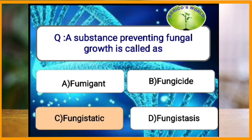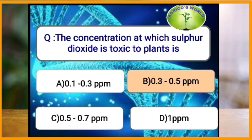A substance preventing fungal growth is known as fungistatic, and the substance which kills fungus is known as fungicide. The concentration at which sulfur dioxide is toxic to plants is 0.3 to 0.5 ppm.